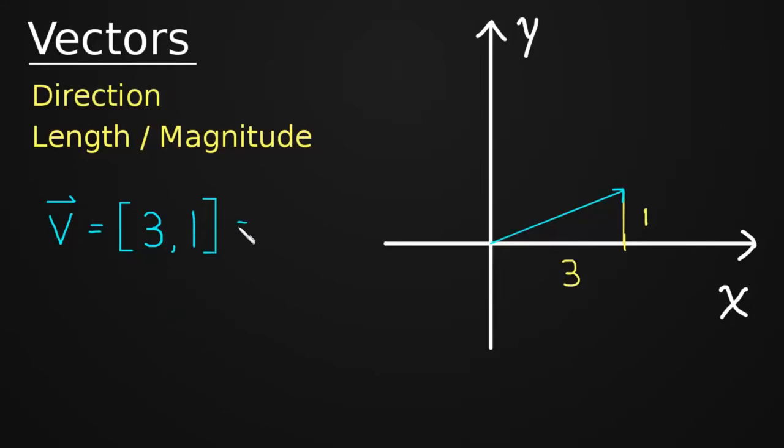Just a bit of notation here. This is also written as a column. And it's the exact same information. It's just vertical now. And again, this is still the X component and still the Y component.